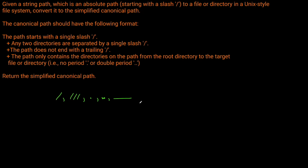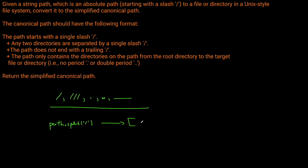The algorithm we want to use is to take the path and split it on slashes. This will give us a list that can contain a single dot, a double dot, a directory name, or an empty string. The empty string case happens when we split on slashes and there are multiple slashes together — since there's nothing between them, we get an empty string.